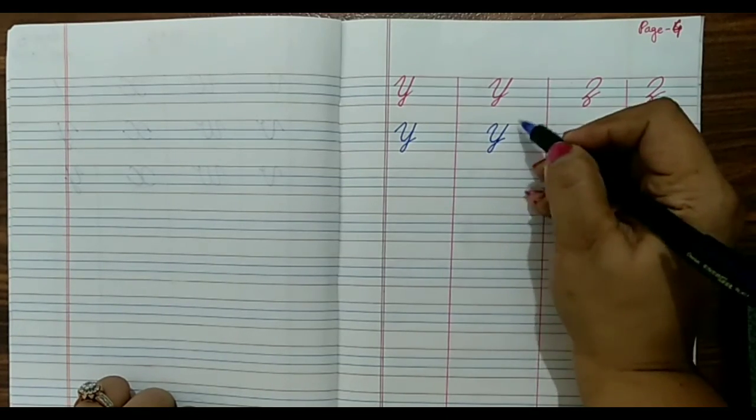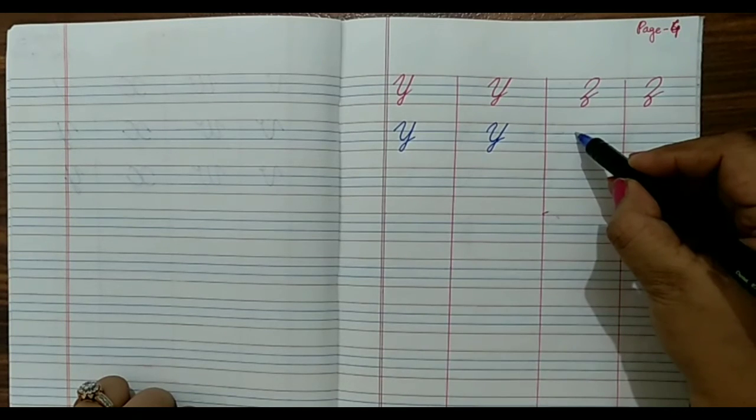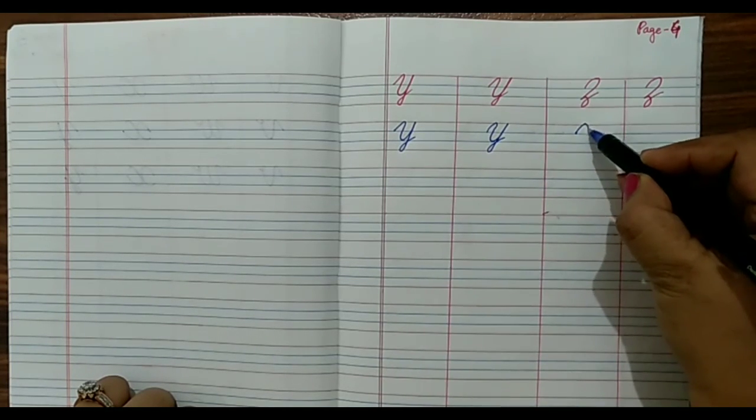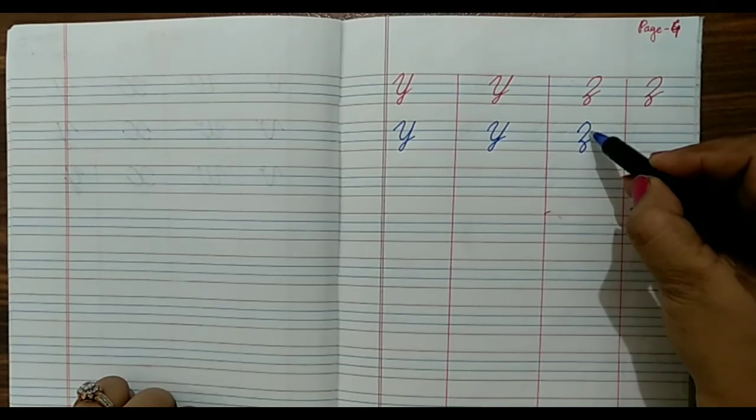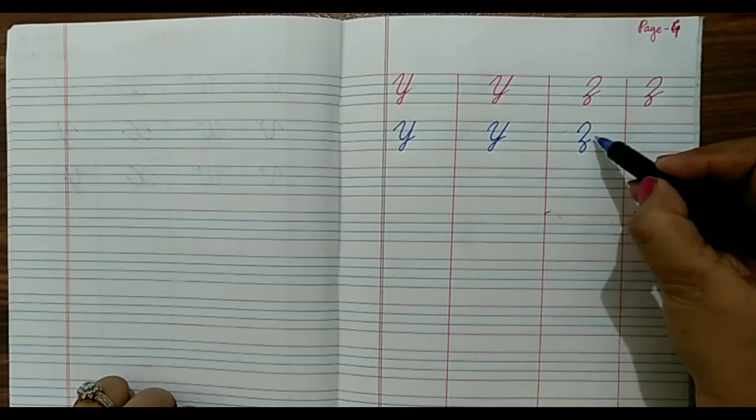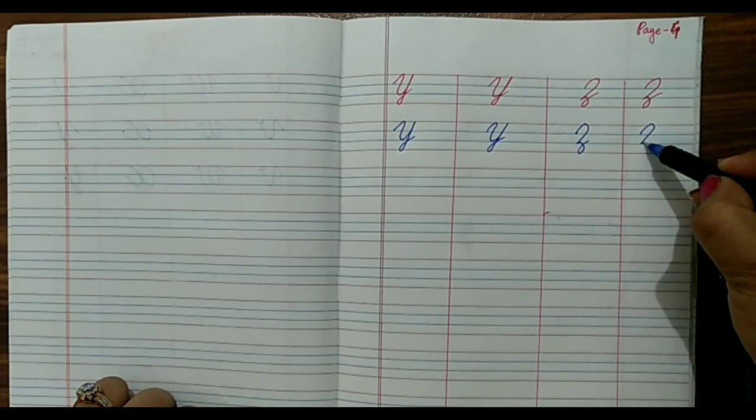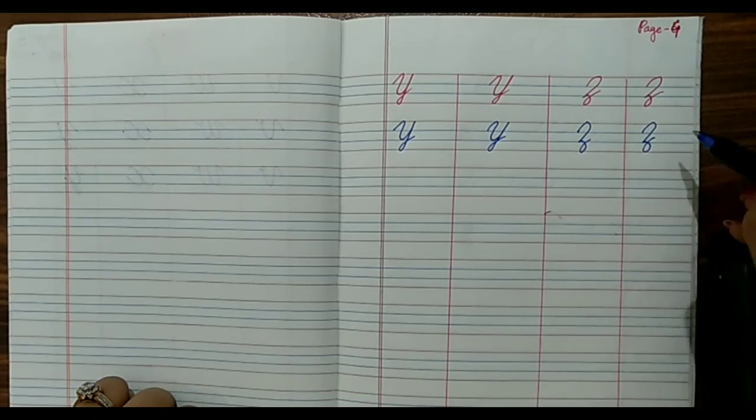Try to write a bit slanting in cursive, and now for Z, we have to go up, come down and then make a curve and touch at the bottom blue line.